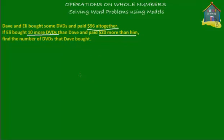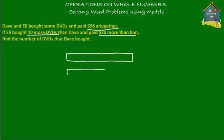Let's start with the model diagram. Let's make a model that represents the sum of money that Dave spent on the DVDs. Let's say this is how much Dave spent on the DVDs. Ellie spent $20 more dollars than Dave did, so her bar is going to be a little longer than Dave's. Let's say this is how much Ellie spent.